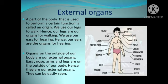Organs on the outside of our body are our external organs. Ears, nose, arms and legs are on the outside of our body; hence they are our external organs. They can be easily seen.